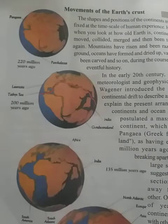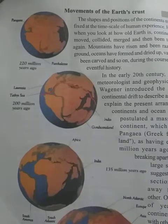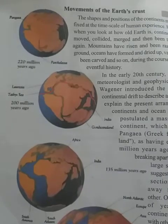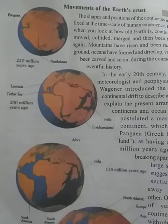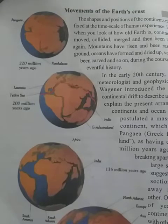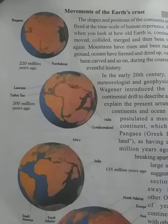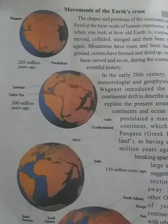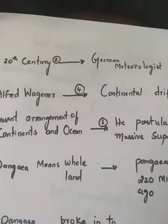In this you can see how the earth was formed and the present position of the continents. When you look at how old our earth is, continents have moved, collided, merged and have been torn apart. Mountains have risen and raised, oceans have formed and dried up, valleys have been carved. Let's see earth's eventful history here.